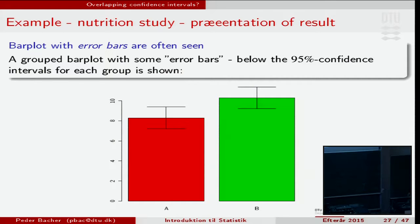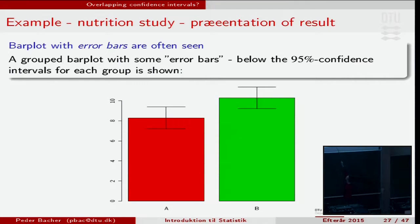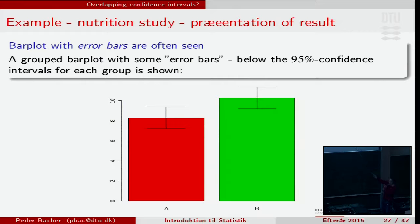If we have two samples, sample A and sample B — that's the nutrition example — what we could do was to calculate the confidence interval for sample A and the confidence interval for sample B. And then we can actually conclude something by comparing these. But we also have to be careful, because right now we can see that they are slightly overlapping.